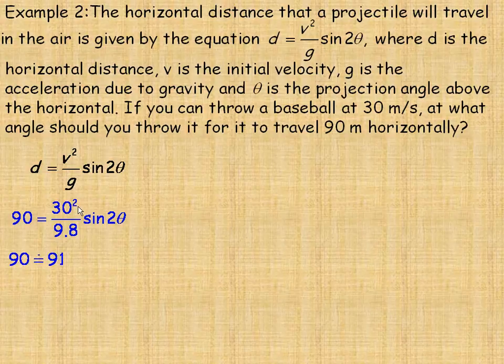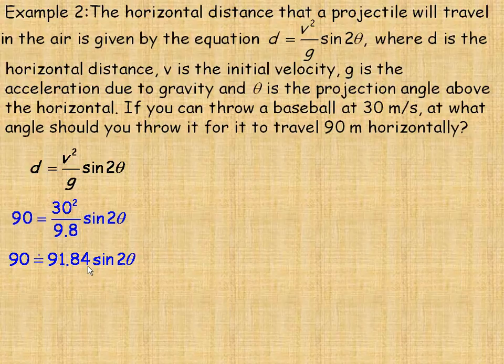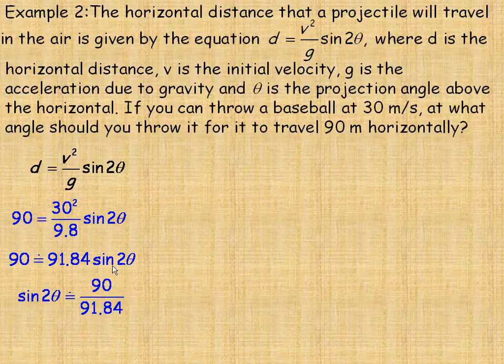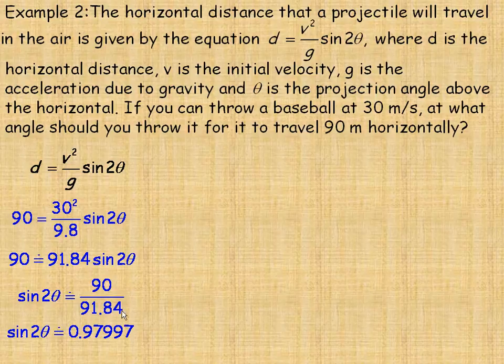So simplifying the 30 squared over 9.8, 30 squared is 900 divided by 9.8 is 91.84. And so I would divide out the 91.84. So the sine of 2 theta would equal 90 divided by 91.84. And 90 divided by 91.84 is approximately 0.97997.